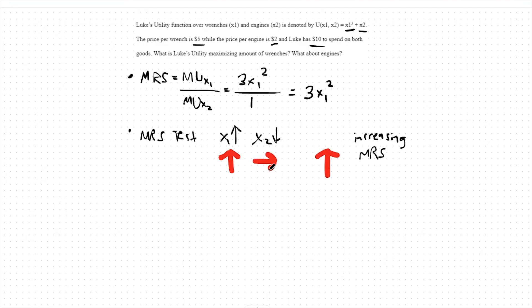In the event that we find an increasing MRS, we should solve this problem similar to a perfect substitutes type utility function problem. This means we're going to figure out what happens if I purchase all of one good or all of the other, and which gives me the higher utility.